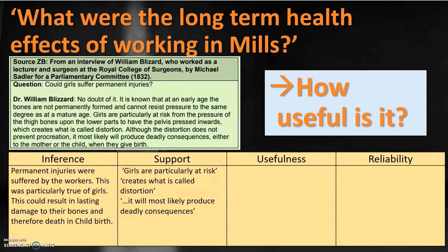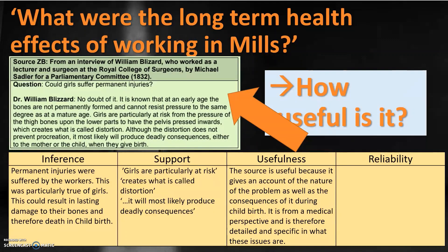The next aspect is how useful this source is. With usefulness we are looking at the source itself. This source is useful because it gives an account of the nature of the problem as well as the consequence during childbirth. We describe what the source says and state how it refers to our question. Because the source is from a medical perspective and is detailed and specific about the issues, I would say this is a useful source for our inquiry.